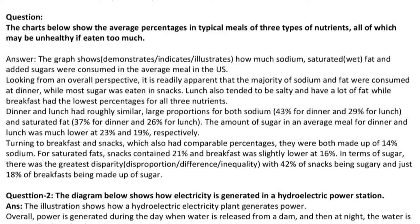Turning to breakfast and snacks, which also had comparable percentages, they were both made up of 14% sodium. For saturated fats, snacks contained 21% and breakfast was slightly lower at 16%. In terms of sugar, there was the greatest disparity, with 42% of snacks being sugary and just 18% of breakfasts being made up of sugar.